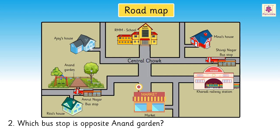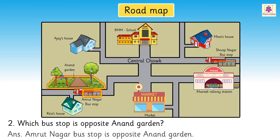Question 2: Which bus stop is opposite Anand Garden? To find the answer, first locate the Anand Garden. Correct! The Amrit Nagar bus stop is opposite Anand Garden. Look, we found the answer.